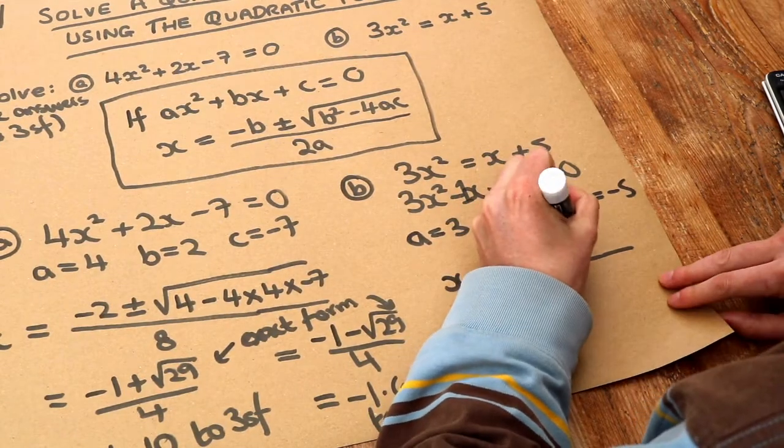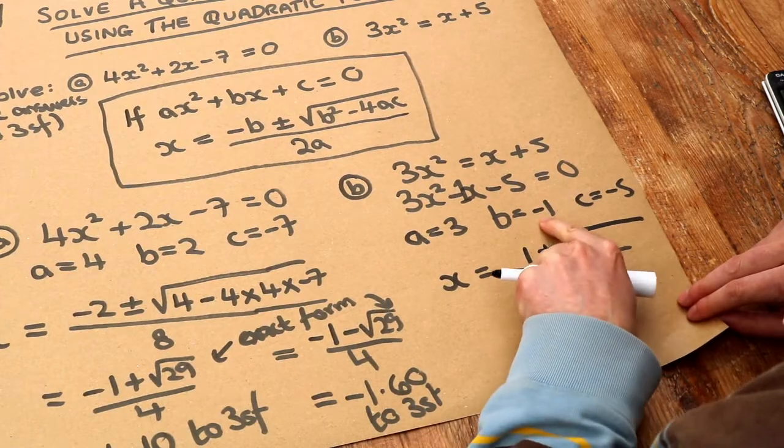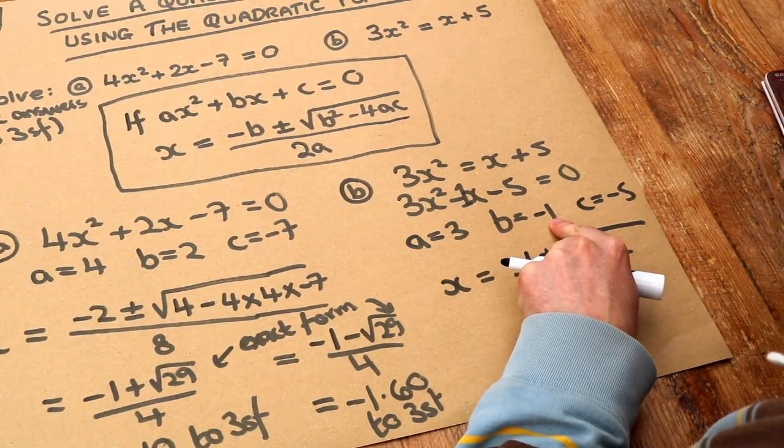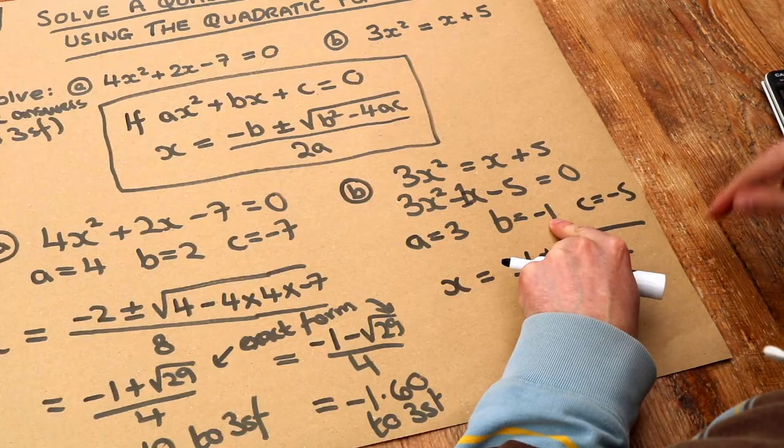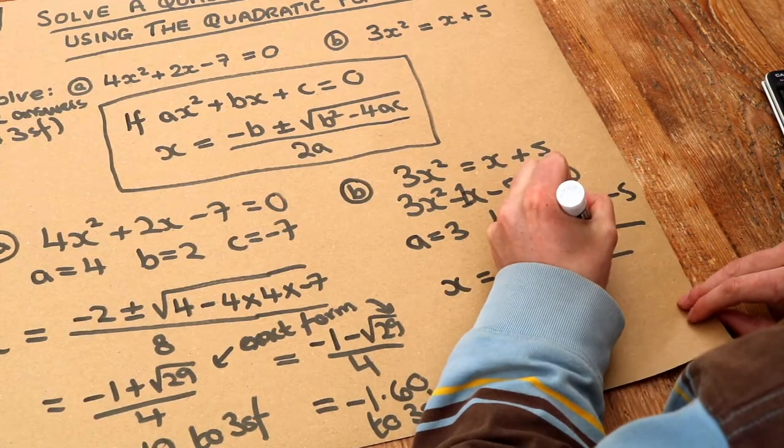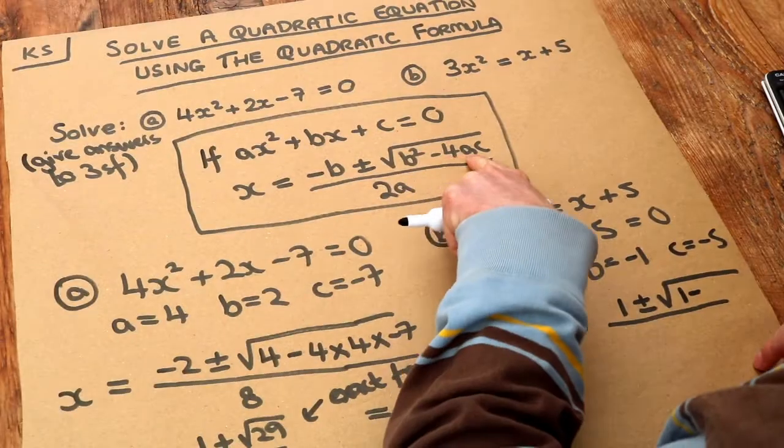Again plus or minus the square root of b squared. Now minus 1 squared, any number squared is positive because negative times negative is positive. So we get positive 1 and then minus 4ac.